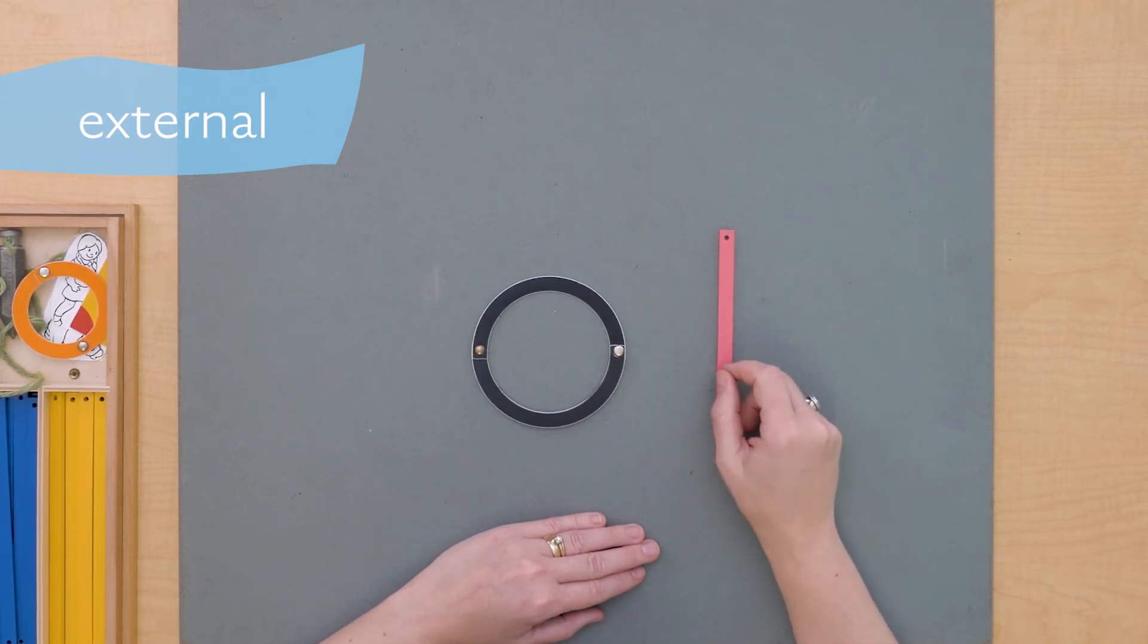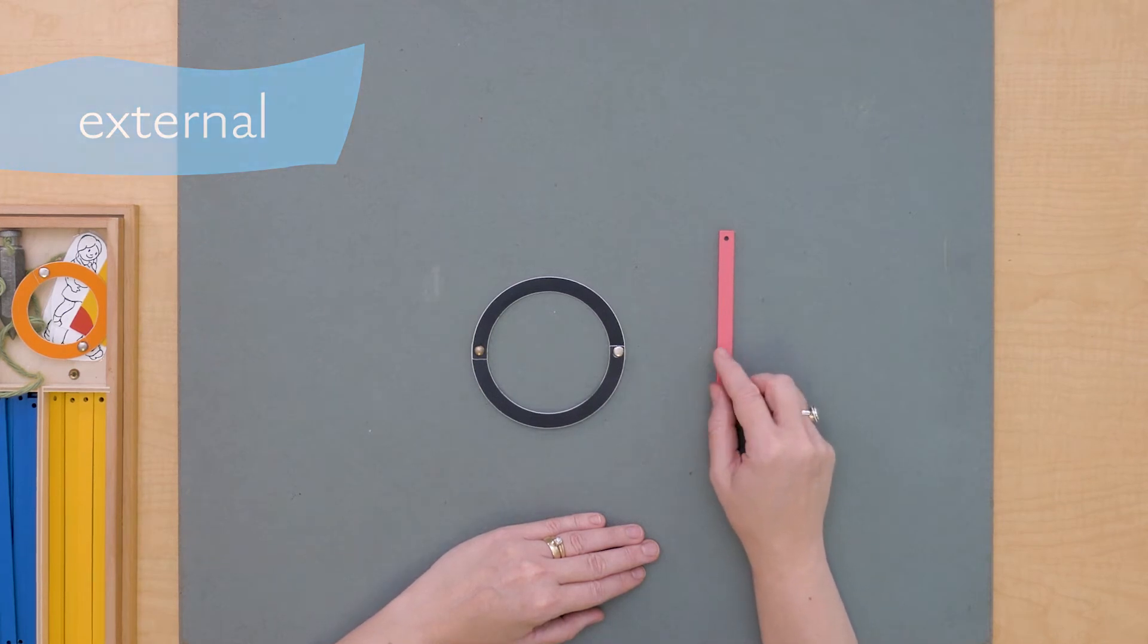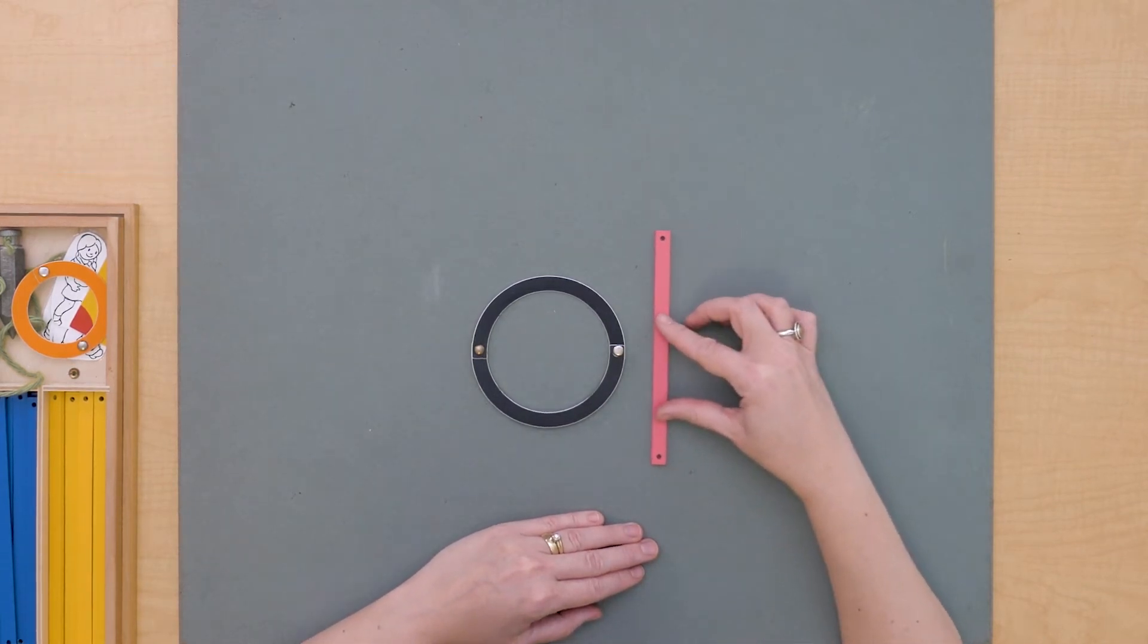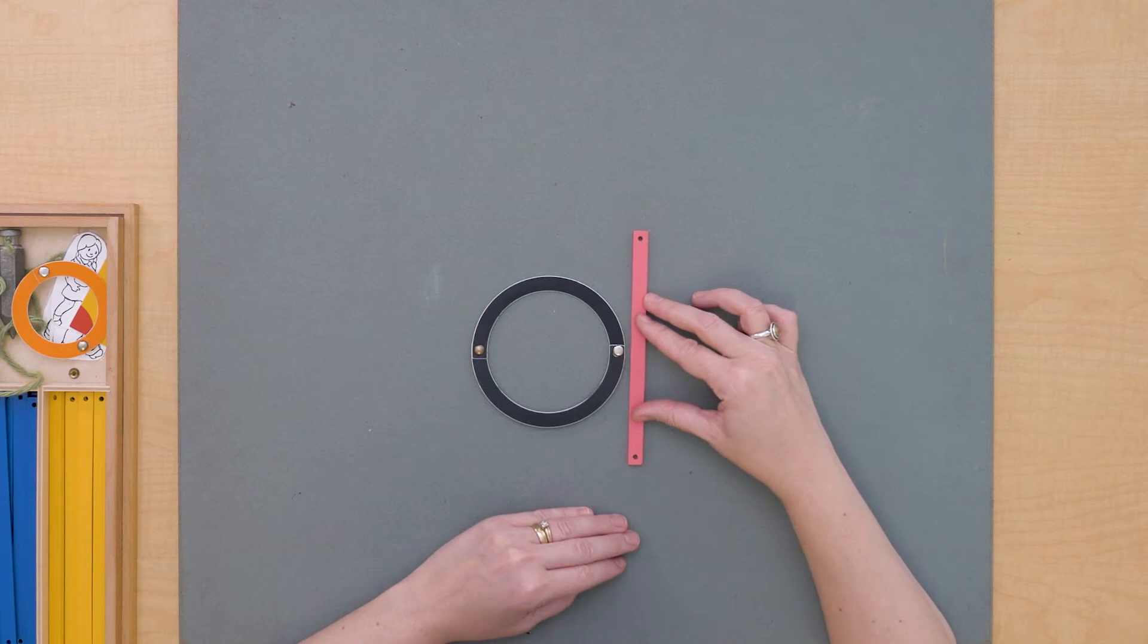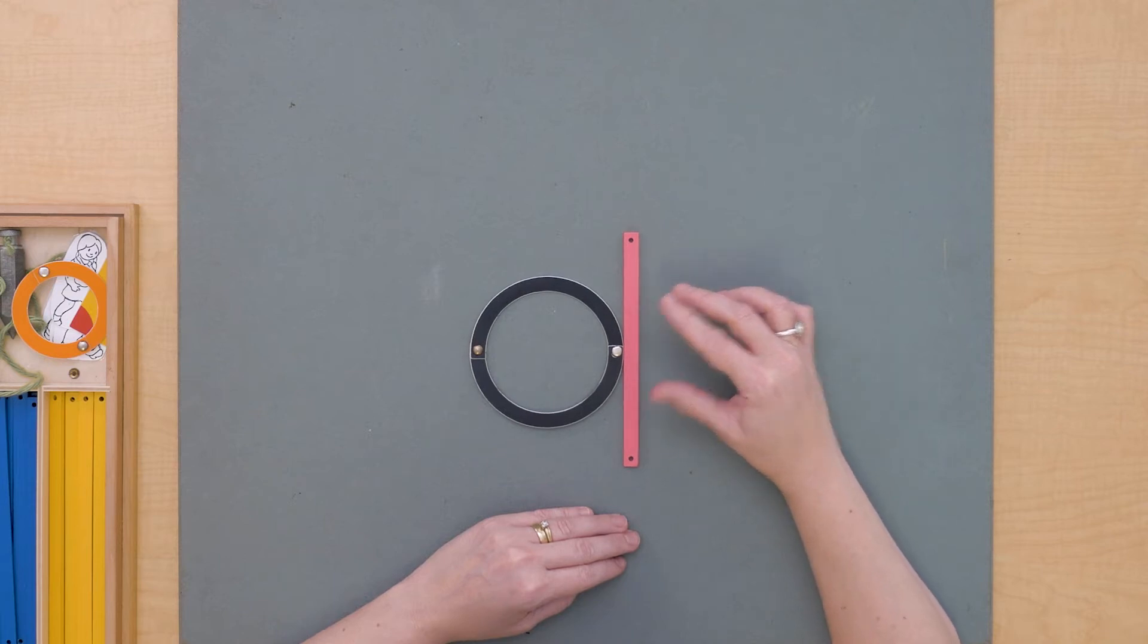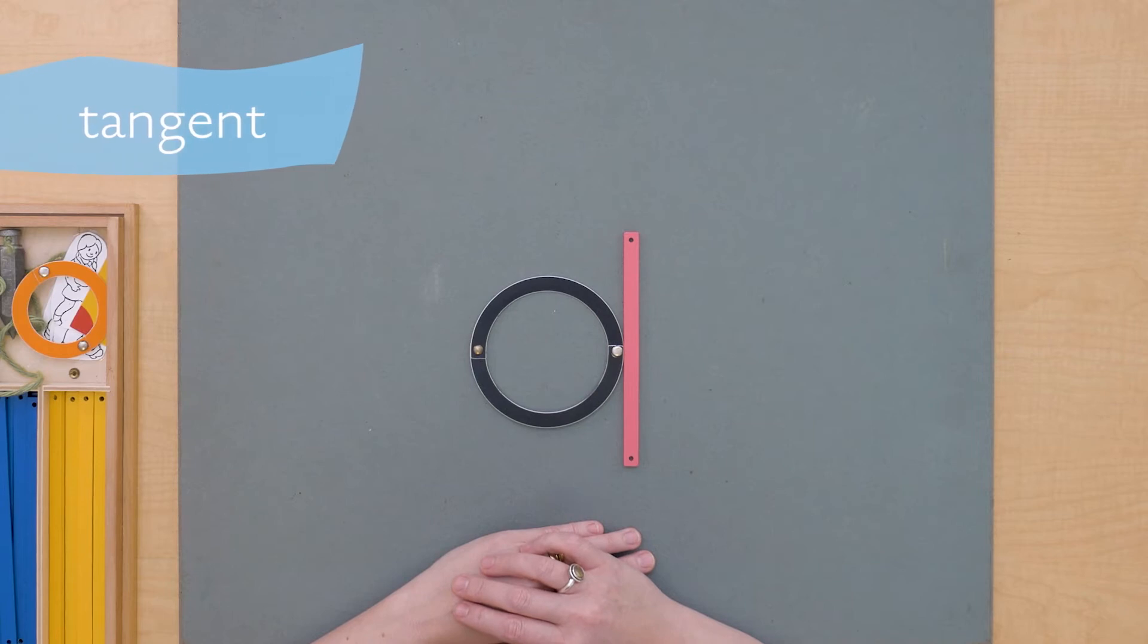It's external, but if I move it here so that the line touches the circumference at just one point, we say that the line is tangent to the circle. It's touching at just one point, it's tangent.